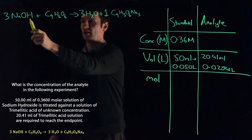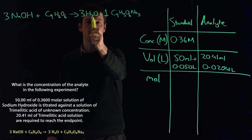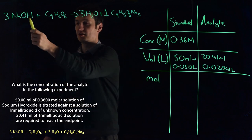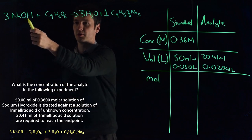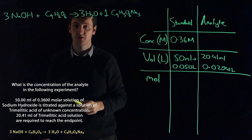Three of these react with one of these, to give you three of these and one of those. So for every three sodium hydroxides you put in, you put in one trimellitic acid.